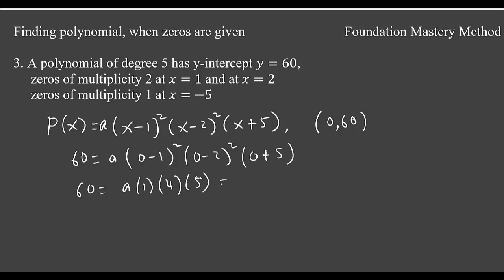So that means you have 20a. That means a is 60 over 20 which is 3. So then our polynomial looks like now f(x) is 3 times (x minus 1) squared (x minus 2) squared, and then (x plus 5). We are done.